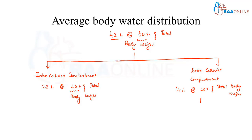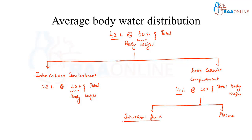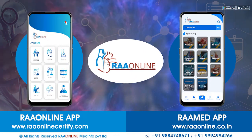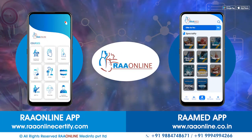The extracellular fluid compartment can be subdivided into two sub-compartments: one is interstitial fluid, and the second one is plasma. The 14 liters is distributed among interstitial fluid and plasma. Interstitial fluid carries 10.5 liters and plasma carries 3.5 liters. Out of this 20 percent, 15 percent is present in interstitial fluid and 5 percent is present in plasma.